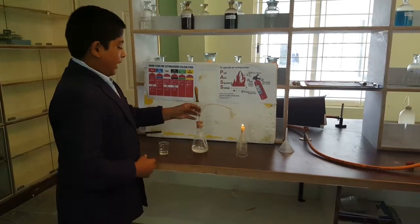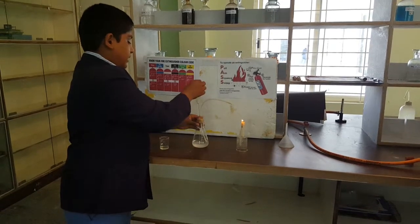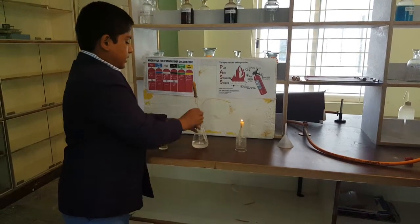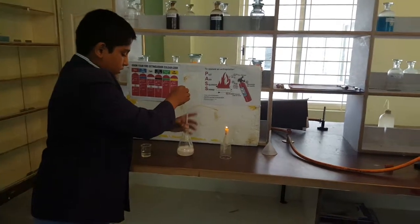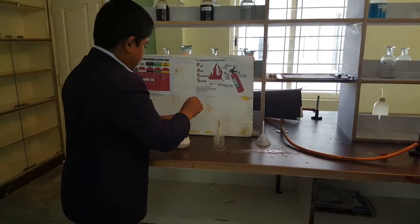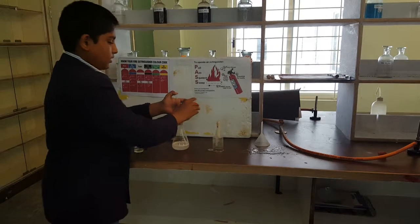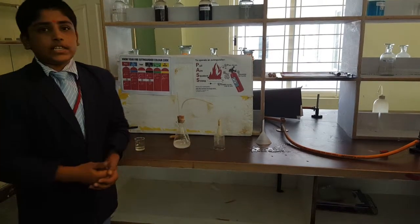Firstly, I take some acetic acid in a dropper and place it in the rubber cork. When I drop this acetic acid, it forms a gas which is rich in carbon dioxide.